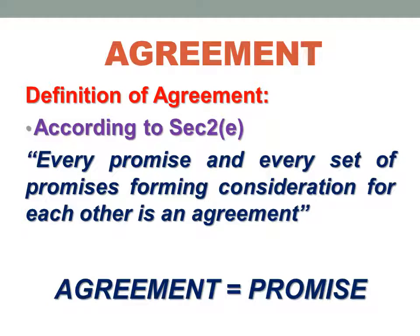This brings us to another equation wherein agreement is equal to promise. Section 2, subsection E terms agreement as a promise. There could be only one promise made by one party to another, or there could be two promises exchanged mutually. The promise would result in an agreement. Once a promise is made, it becomes binding upon both parties to fulfill what they have promised to each other. Hence, a promise is an agreement in fact.